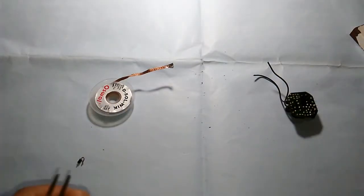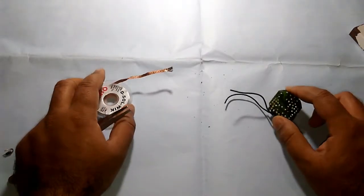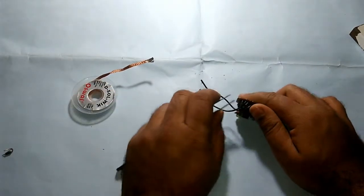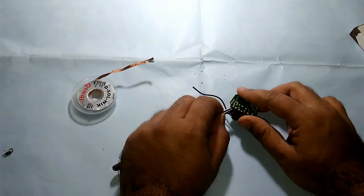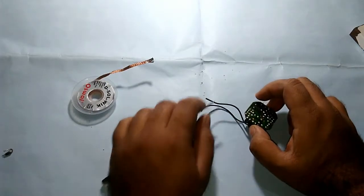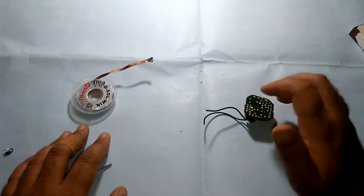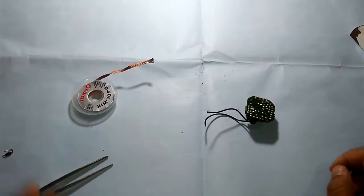And in this way you can easily desolder any component from the PCB board. But remember, don't try to pull the components too hard. If you do that, you will break the legs of the component and it will be of no use after that.